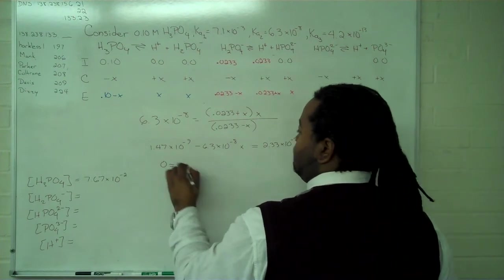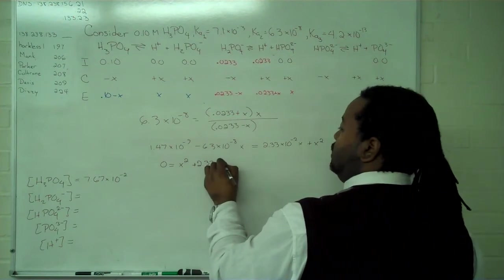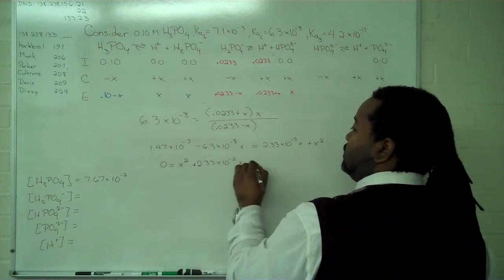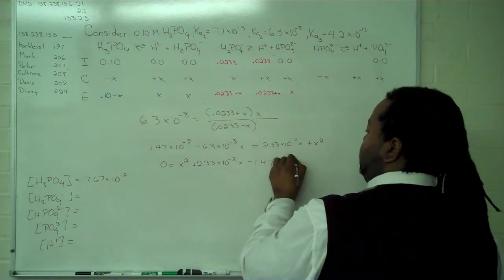So we can rewrite this as a quadratic: x squared plus 2.33 times 10 to the negative 2x minus 1.47 times 10 to the negative 9.